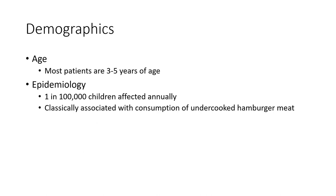Less common manifestations include visual disturbance, bone necrosis, cardiovascular involvement, pancreatitis, and pulmonary hemorrhage. Demographically, most patients are three to five years old, with an epidemiology of approximately one per one hundred thousand children per year. The condition is classically associated with consumption of undercooked hamburger meat.